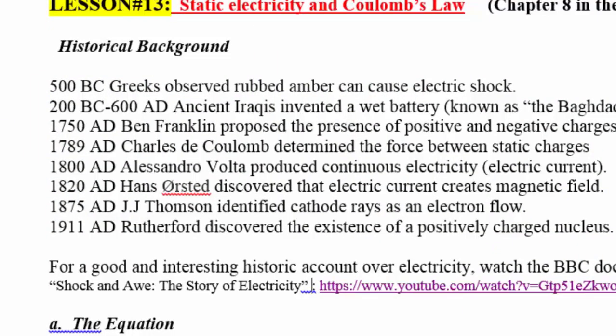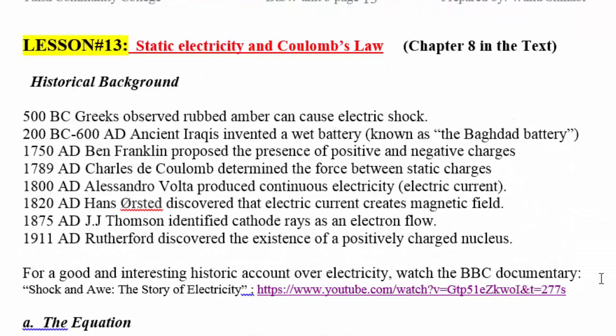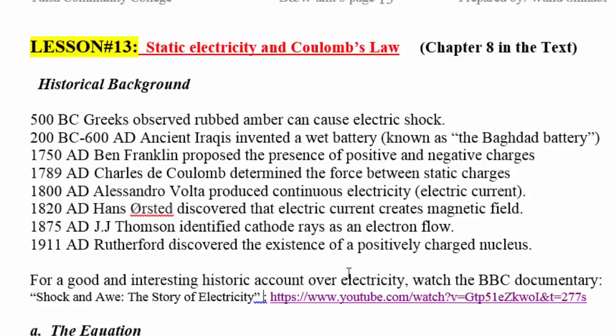In 1800, Volta produced continuous electricity, which is electric current. He actually developed the first dry battery. Volta was able to produce continuous electricity, which we call it electric current, by studying metals and discovering their ability to conduct electricity and to produce electricity in the presence of electrolyte. Volta placed two coins that are made from different metals with a silver spoon on the top of them. And he was able to taste electricity.